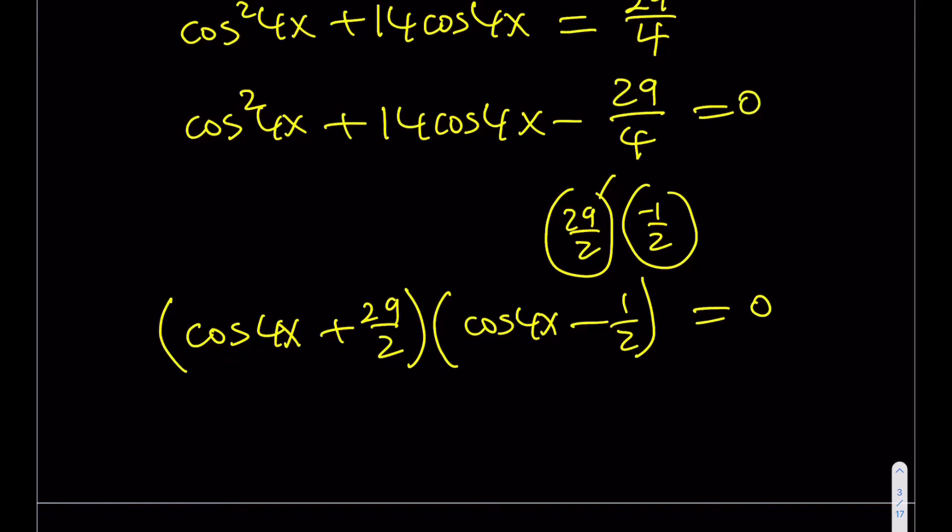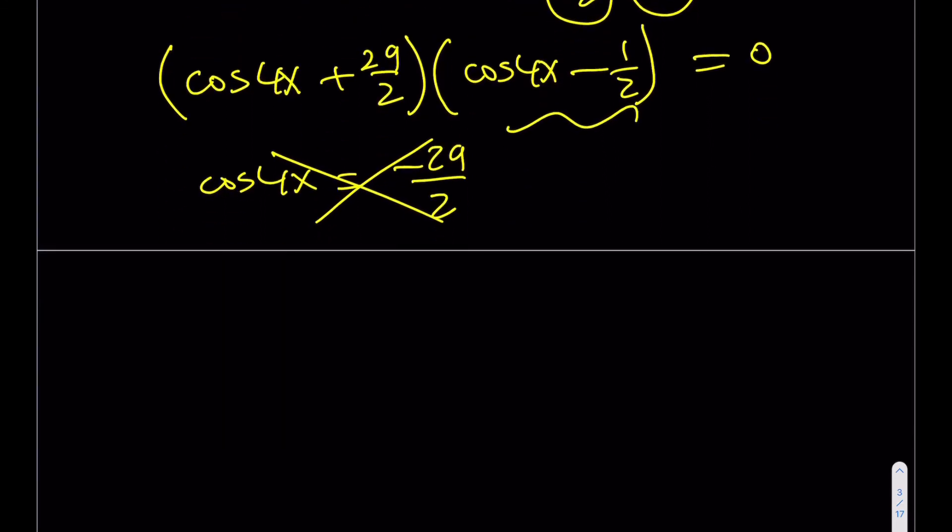Now hopefully at this point you notice what's going on here, because cosine of 4x cannot equal negative 29 over 2. Obviously it's out of the range. Cosine needs to be between negative 1 and positive 1. It needs to be greater or equal to negative 1, but this is way less than negative 1. So this solution is not accepted, but the other one looks pretty good. Let's go ahead and take a look at that.